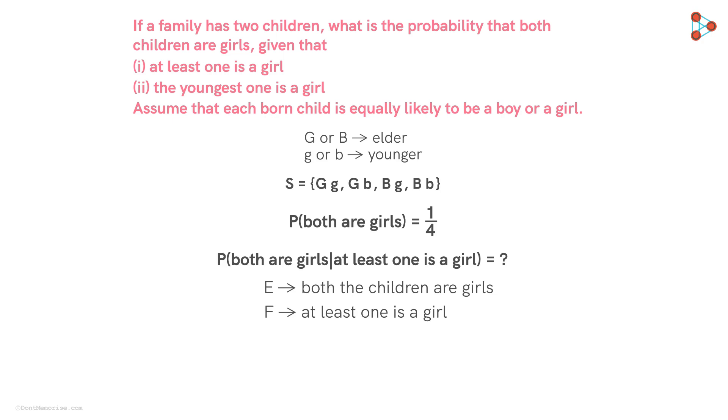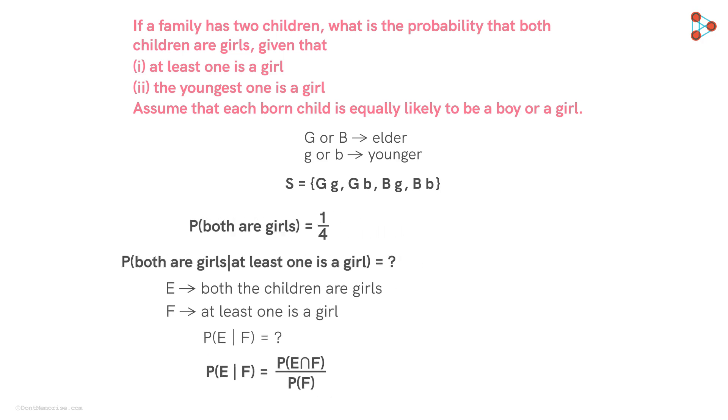Hence, we need to find the probability of E given F. Now the probability of E given F is equal to P of E intersection F upon P of F. Let us find out P of E intersection F first. The event E intersection F is the intersection of the events when both the children are girls and when at least one is a girl. Hence, there will be only one element in the intersection.